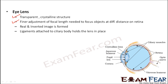The object distance keeps varying. To make sure that the image always forms on the retina, the focal length of the lens has to alter. That is why this lens is an adjustable lens — the focal length can be increased or decreased, and the lens can be made thicker or thinner.